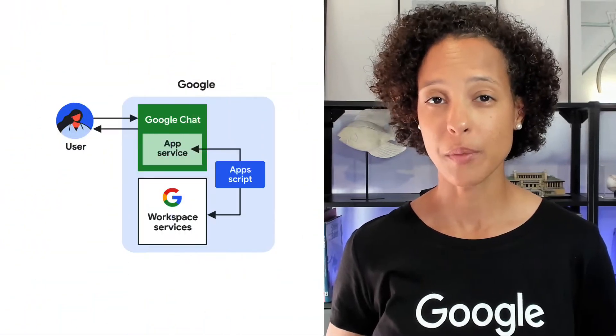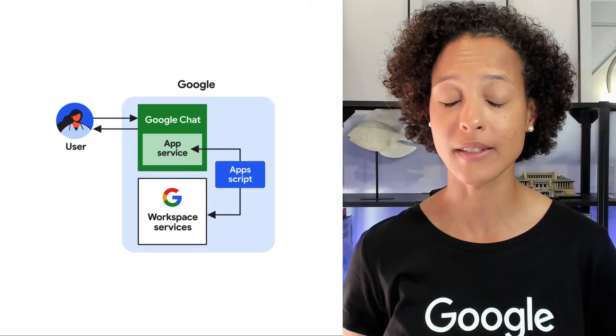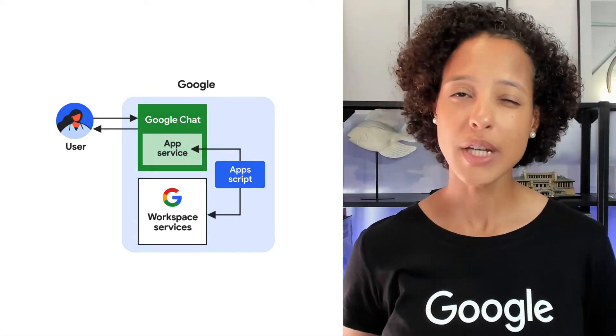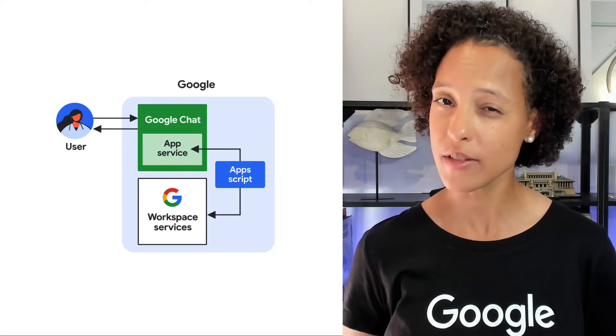Creating your chat app's logic entirely in Apps Script is a good option for speed and simplicity. Apps Script being native to Google Workspace also means that authentication is handled automatically. This makes reading and writing data to Google Sheets, Gmail, Google Drive, and so on, very easy. Since Apps Script is native to Google Workspace, there's no additional cost to hosting your chat app's logic in the cloud. This architecture is best for chat apps for your own domain.